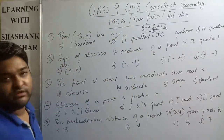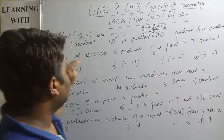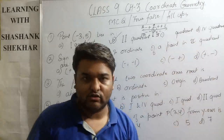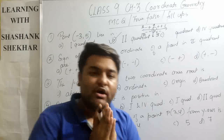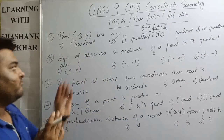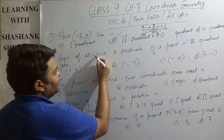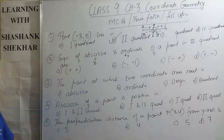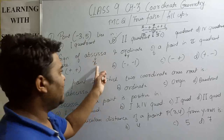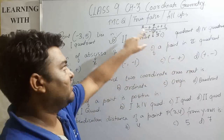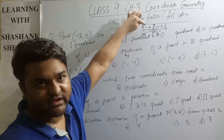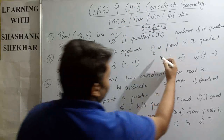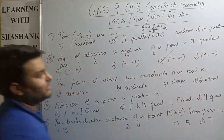Next question: sign of abscissa and ordinate of a point in the second quadrant. We know that abscissa is the x-coordinate and ordinate is the y-coordinate. In the second quadrant, abscissa is negative and ordinate is positive, so the sign is minus and plus. Option C is correct.